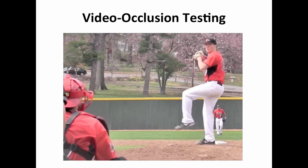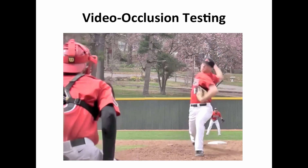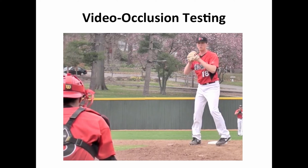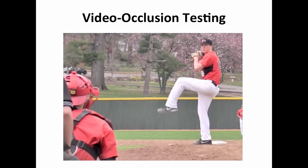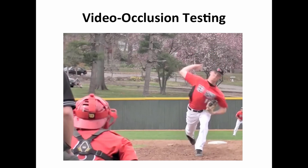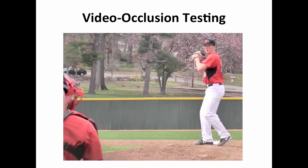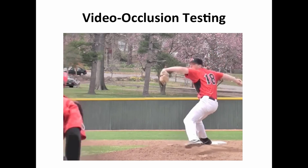Here's how it works. This is the video occlusion method — the pitch is cut off. If you're supposed to guess the pitch type or the location, we'll say it was a curveball ball. There's a fastball strike inside corner. They're cut off at different points. You guess the type, you guess the location. This is the occlusion method.